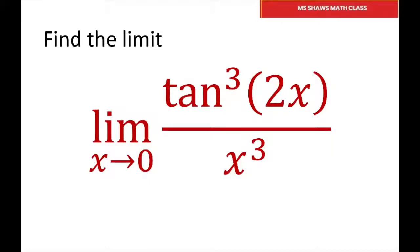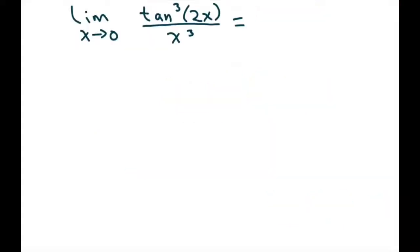In order to do this limit, we need to know the fact that the limit as x approaches 0 of sine of x divided by x equals 1, because we're going to use that fact to help us on this. The next thing we're going to do is write this in terms of, we know tan is sine of x divided by cosine x, and that's what I'm going to do.